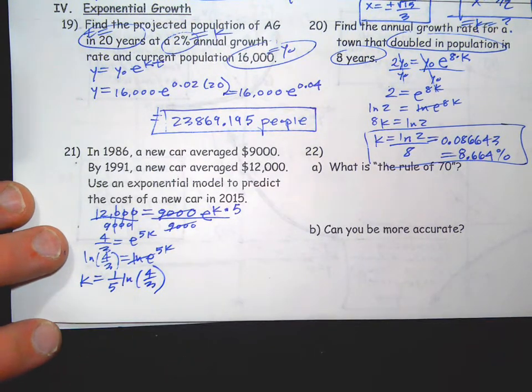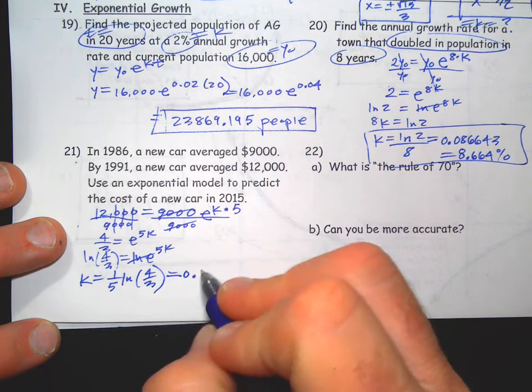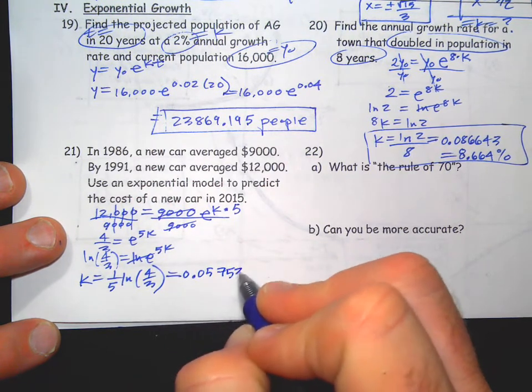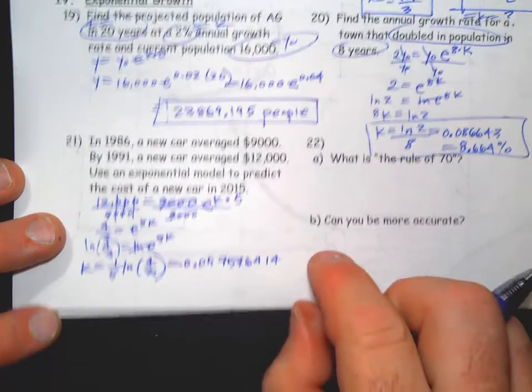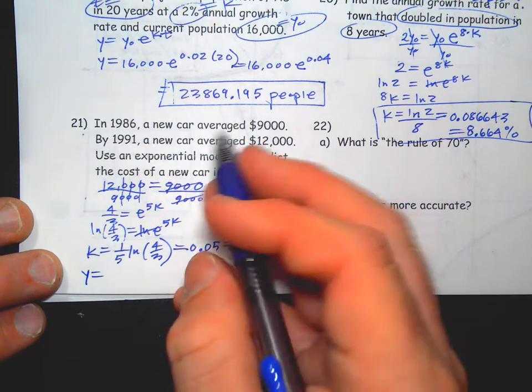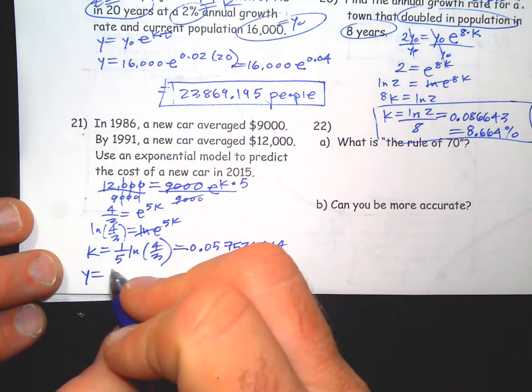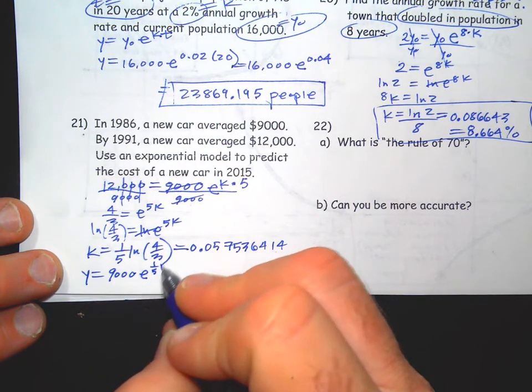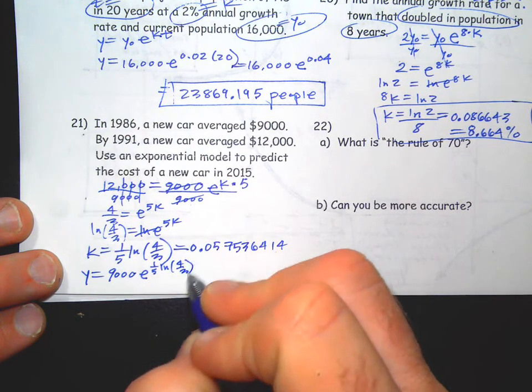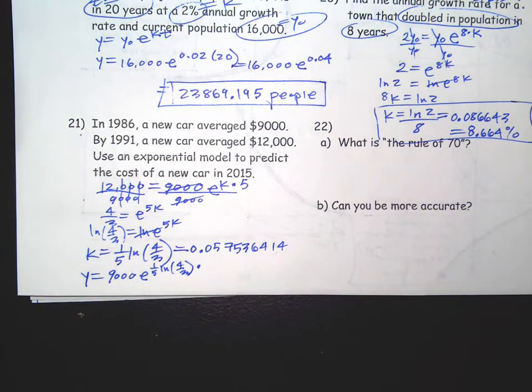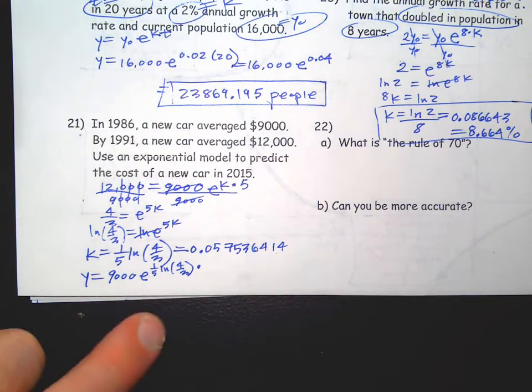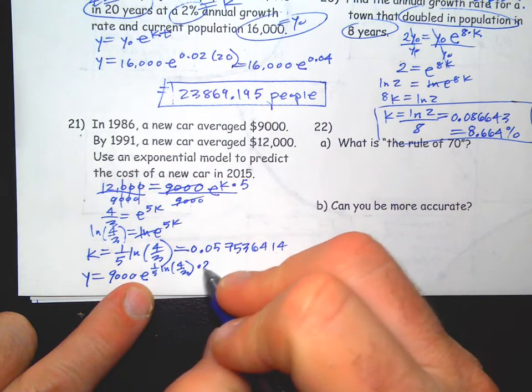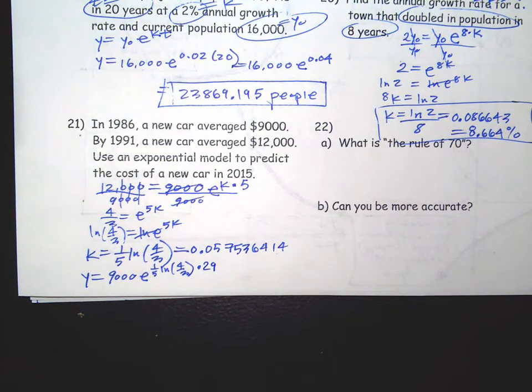So that's the k value. You write it as a decimal if you want, 0.057536414. Then we're going to use this now. We could start at $9,000 in '86, we start in 1991 at $12,000, doesn't matter, you just need to - and I'm going to use this exact value right here, just why not. The time depends on what your year one value is. If you're using $9,000 from 1986, then this is going to be 29 years to 2015. If you use the 1991 value, then you're going to add 24 for your years. Either way.